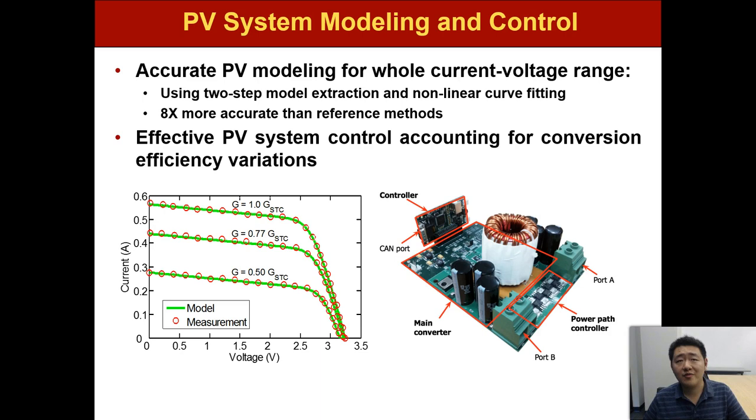The second work is an effective PV system control that accounts for the conversion efficiency variation and achieves the maximum output power of the PV system. The right figure shows the hardware design of this problem.